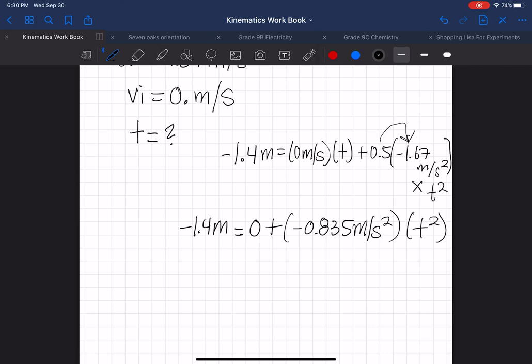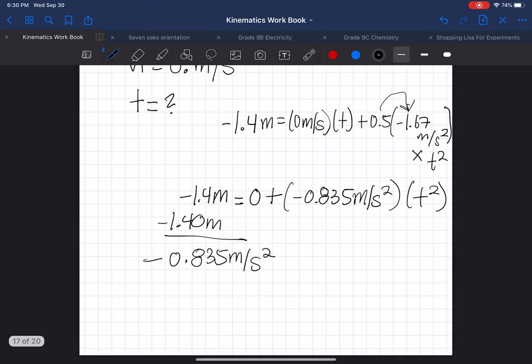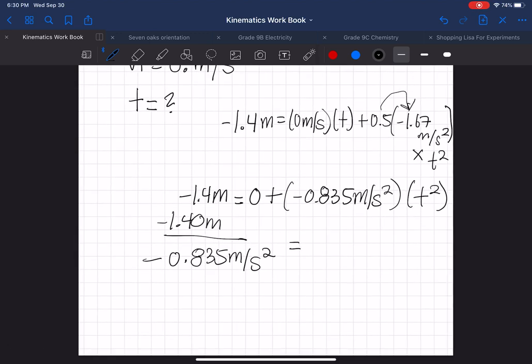And we're still isolating for t squared, so we're just going to move everything over to the other side of the equation. So we actually have negative 1.4 divided by negative 0.835 meters per second squared, and you get t squared over here. Then you get 1.68 seconds squared equals t squared, and square root it, and then you get a value of 1.29 seconds for time.